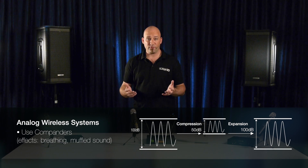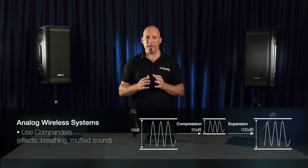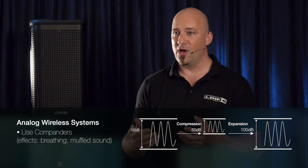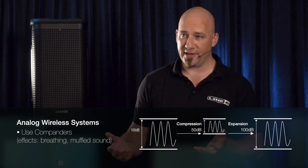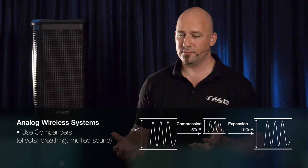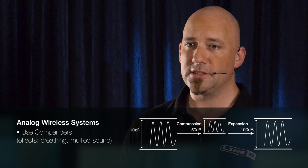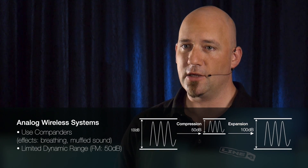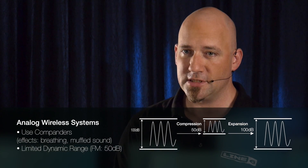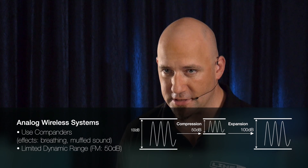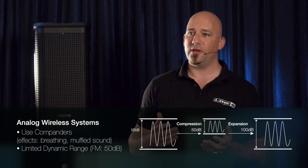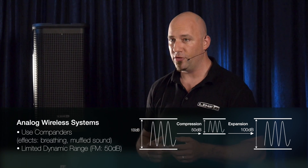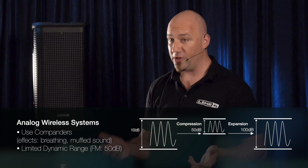Typical FM transmitters will also include a limiter to prevent overload conditions of the audio signal. The dynamic range in analog systems is further reduced due to a technique called pre-emphasis de-emphasis, which is used to improve the signal-to-noise ratio during transmission.